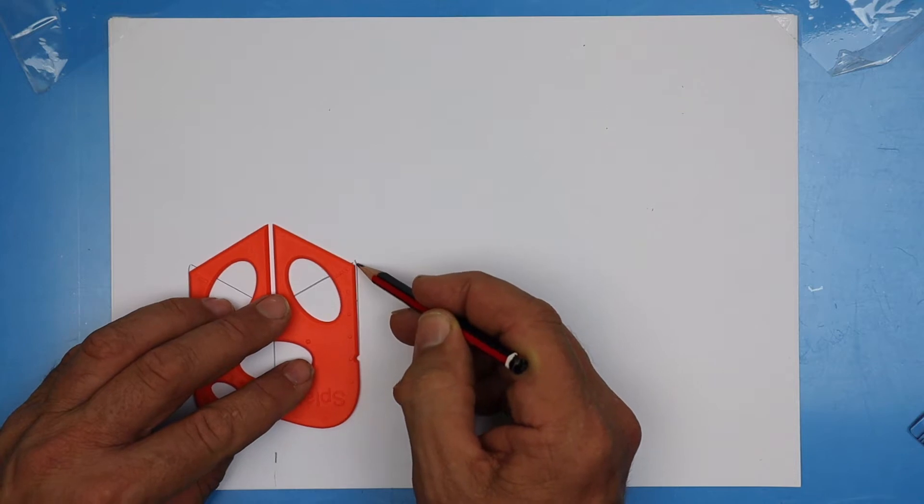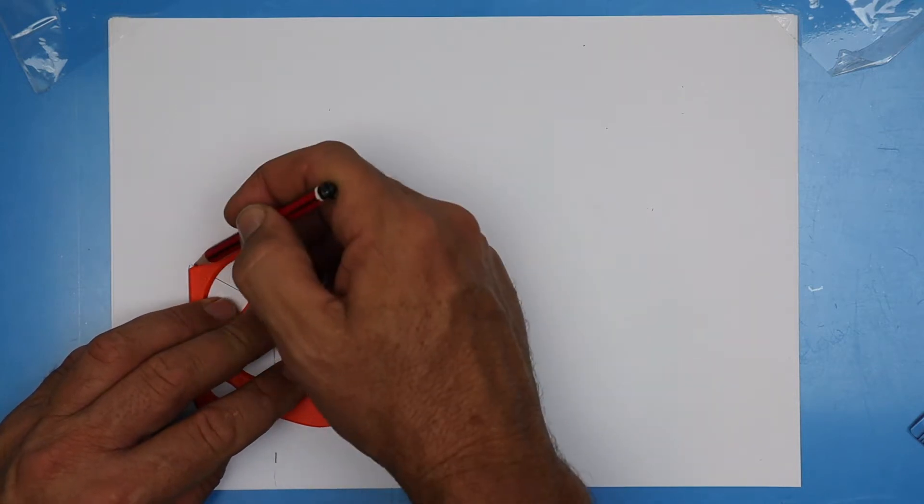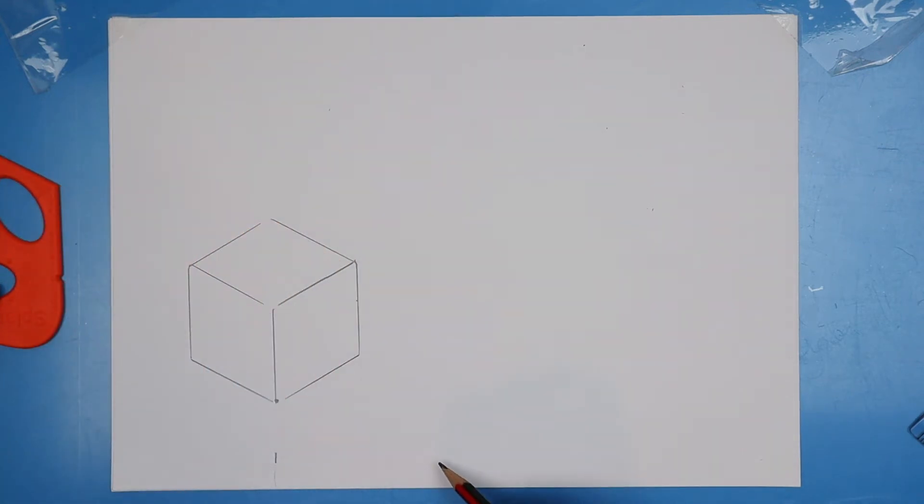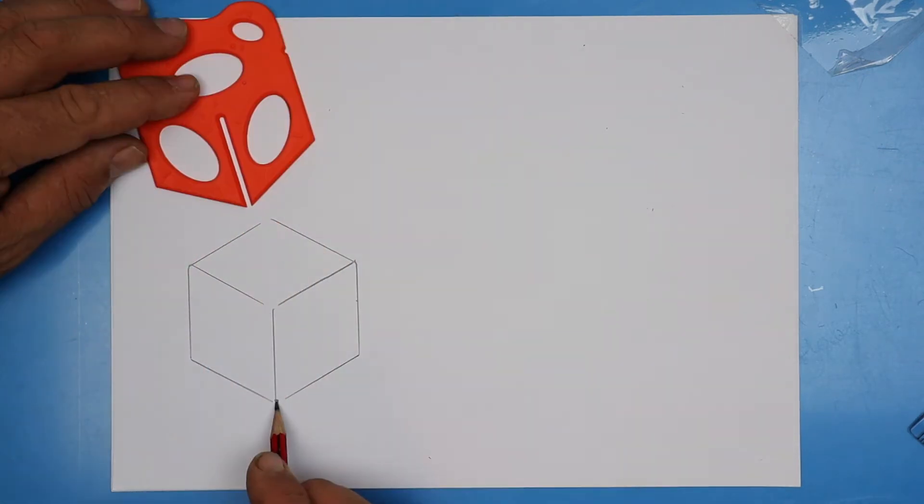And now rotate the splat to draw in those far two edges. Line up that corner with the corner. Don't worry if there's a gap in your lines there because these are really only guidelines. So draw as light as you can, much lighter than you see me drawing here.